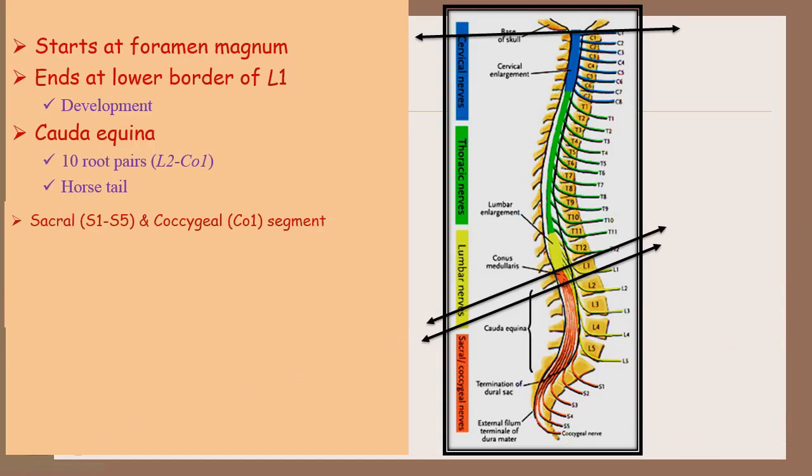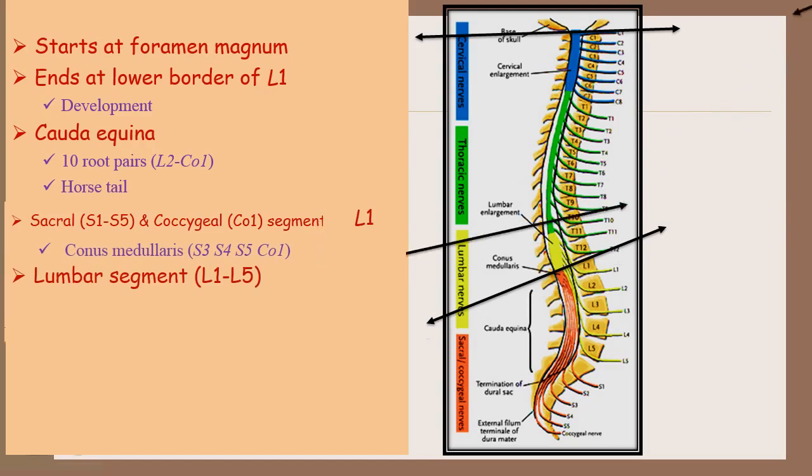The sacral and coccygeal segments are present in front of L1. Conus medullaris is the tapering end of spinal cord. It is formed by S3, S4, S5 and Co1 spinal segments. The lumbar segment is present in front of T11 and T12 vertebra.